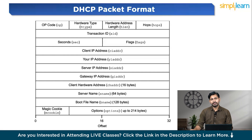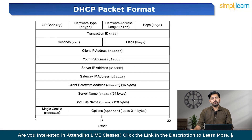Number of seconds is a 16-bit field indicating how many seconds have passed since the client started trying to connect, helping track time during the boot process. Flags is also a 16-bit field where only the leftmost bit is used — if set, the server sends its reply as a broadcast to all devices rather than a unicast directly to the client; remaining bits are set to zero. Client IP address is a 4-byte field containing the client's IP address if it already has one; otherwise filled with zeros. Your IP address is a 4-byte field filled by the server with the IP address assigned to the client. Server IP address is a 4-byte field holding the IP address of the DHCP server.